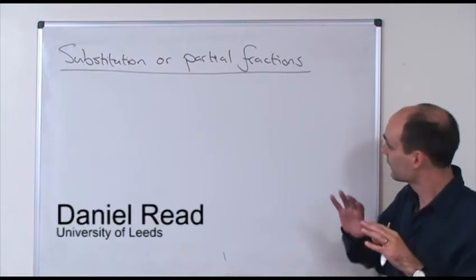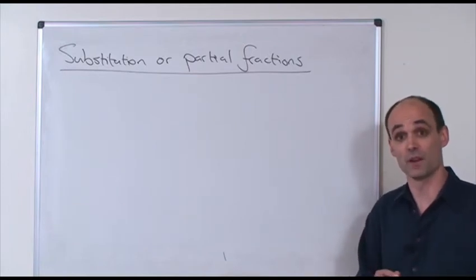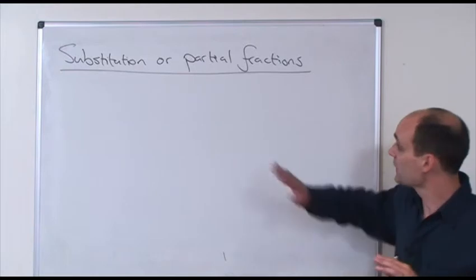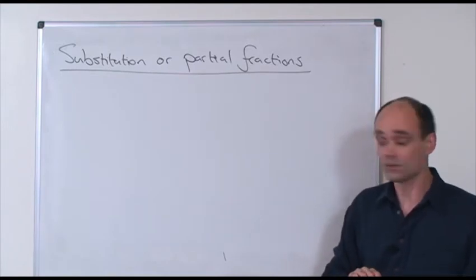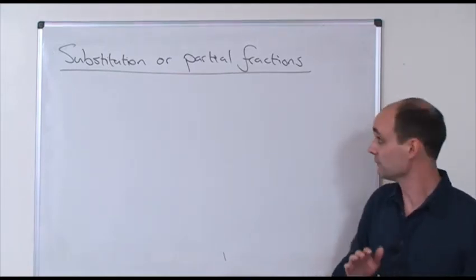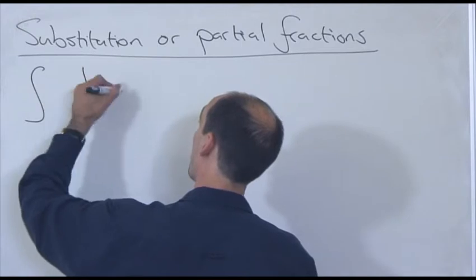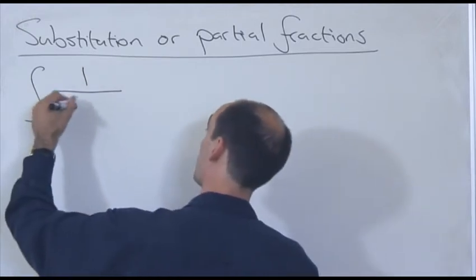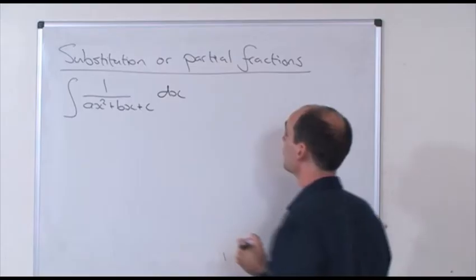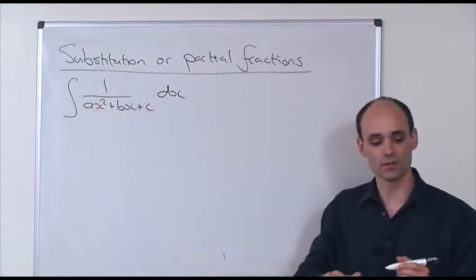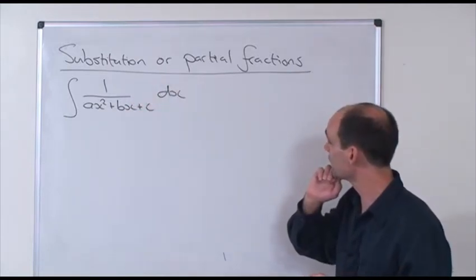The last bit I'm going to talk about is another conundrum that comes up when you're trying to think about what substitution method should I use. Sometimes you get cases where you might want to use a substitution and sometimes you might want to use partial fractions integration. This conundrum comes up when you have integrals involving things like 1 over a quadratic, something like ax squared plus bx plus c with respect to x, sometimes with a linear function of x on top. Should I use substitution or partial fractions?